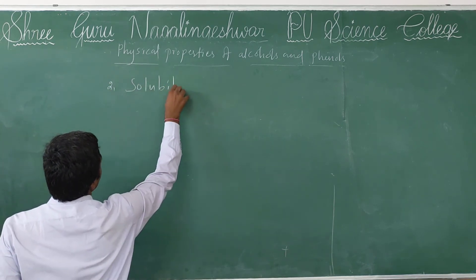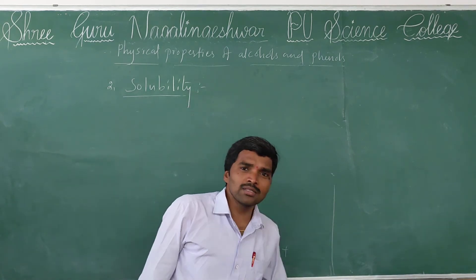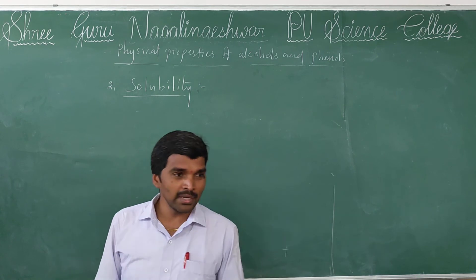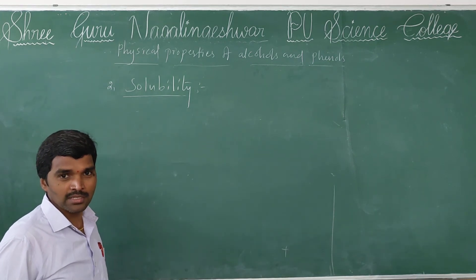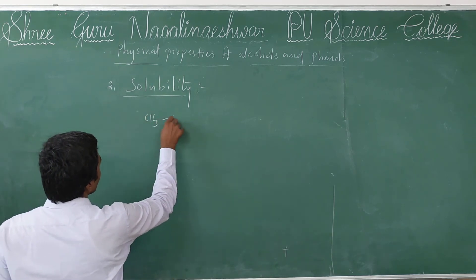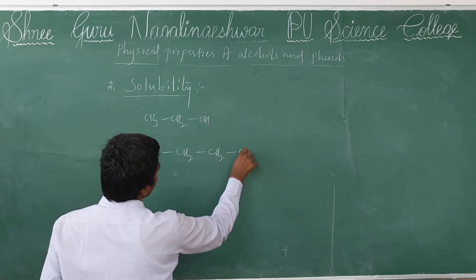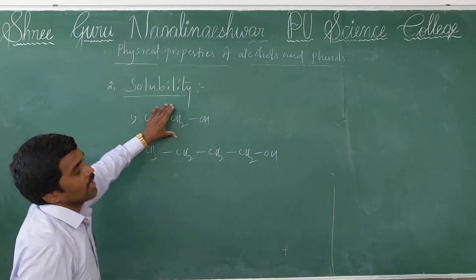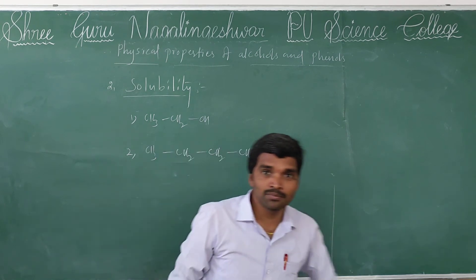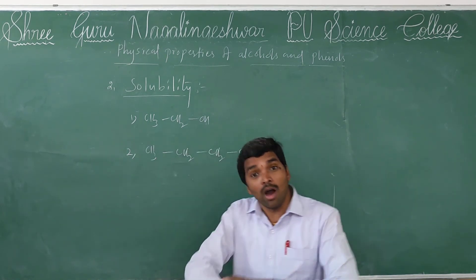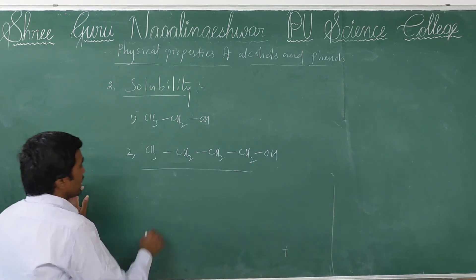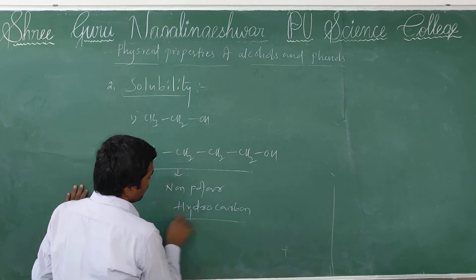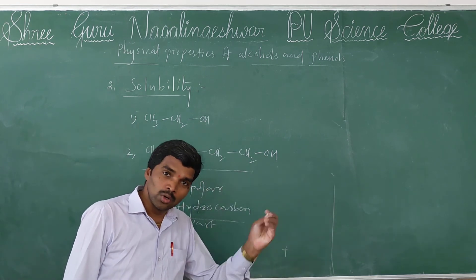Second property — solubility. Alcohol is also more soluble in water. Why? Because, as already told, alcohols form intermolecular hydrogen bonds. But the solubility decreases when carbon chain increases. For example, taking ethanol and butanol — ethanol is more soluble. Low molecular mass compounds are more soluble in water in all proportions. Why? Because higher alcohols have a non-polar hydrocarbon part, so higher alcohols are less soluble in water.